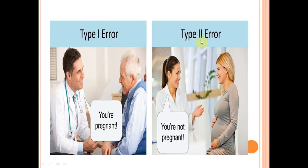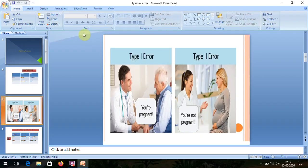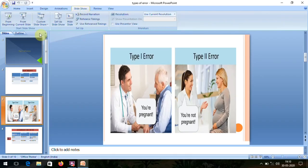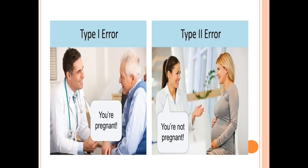In this example we have two scenarios: we are telling a male person that he is pregnant, and we are telling a pregnant lady that she is not pregnant. The first is Type 1 error — that is false assurance or false positive error. The second is Type 2 error — that is false negative error. She is actually pregnant but we are giving false negative information.